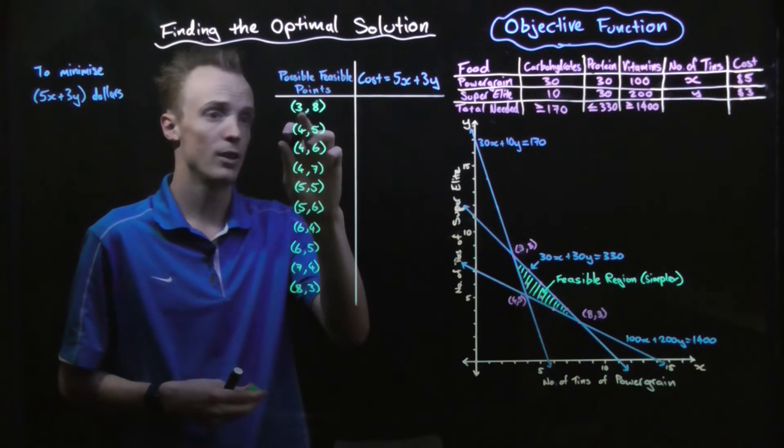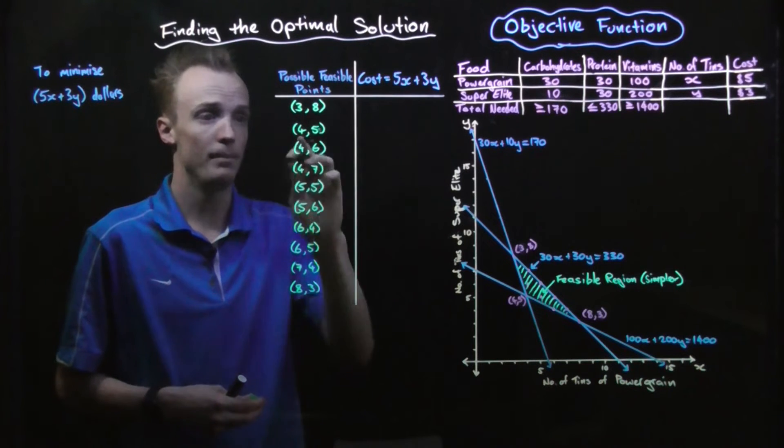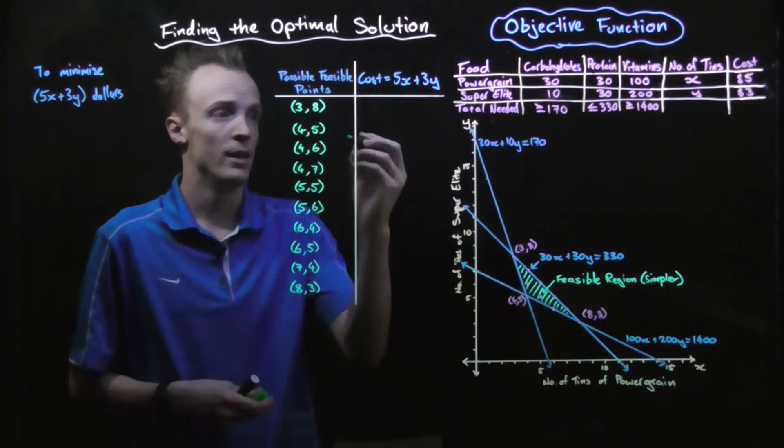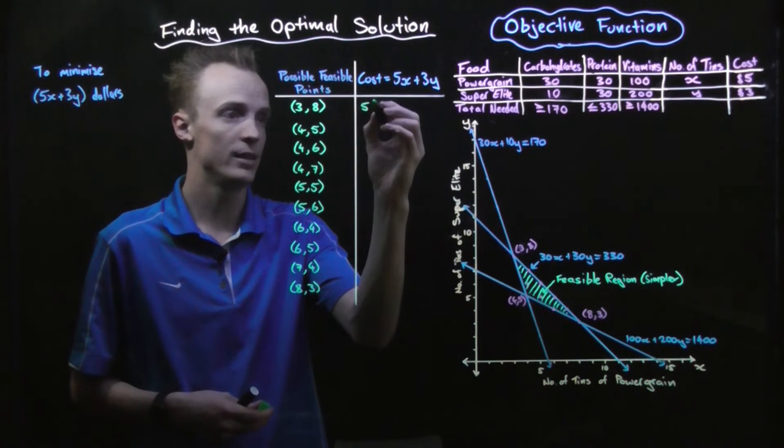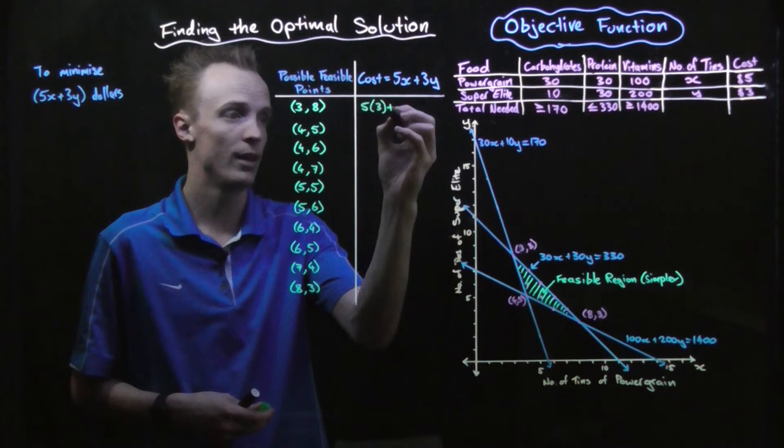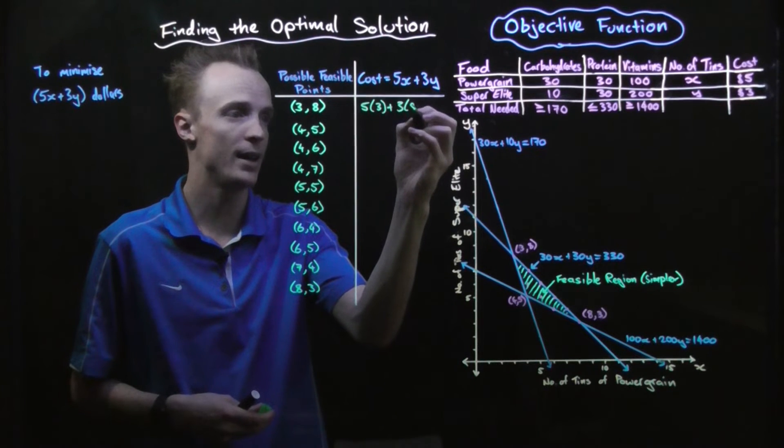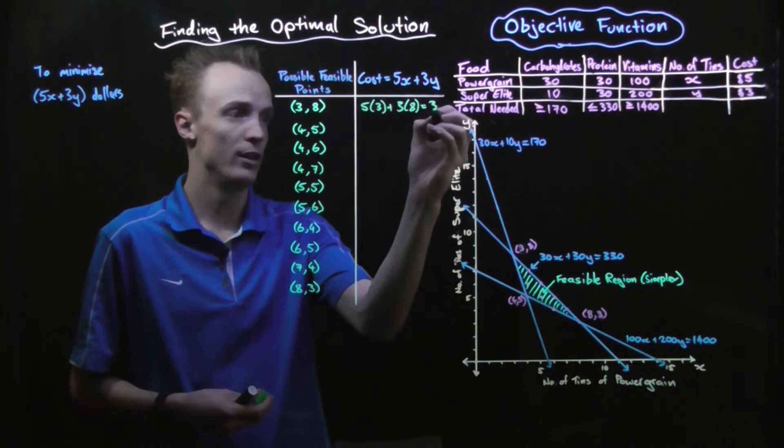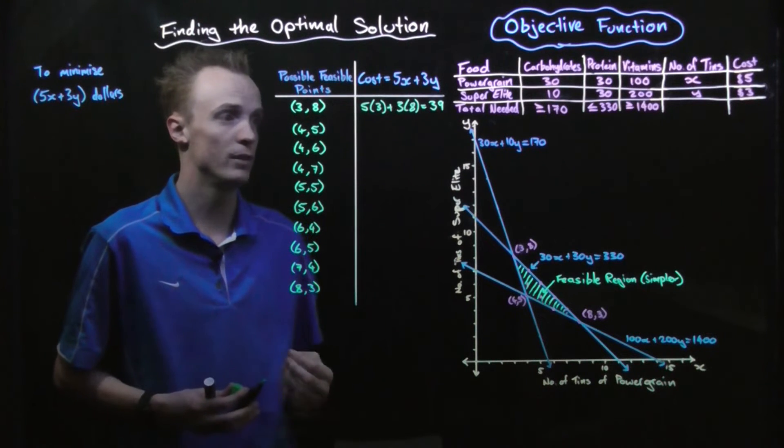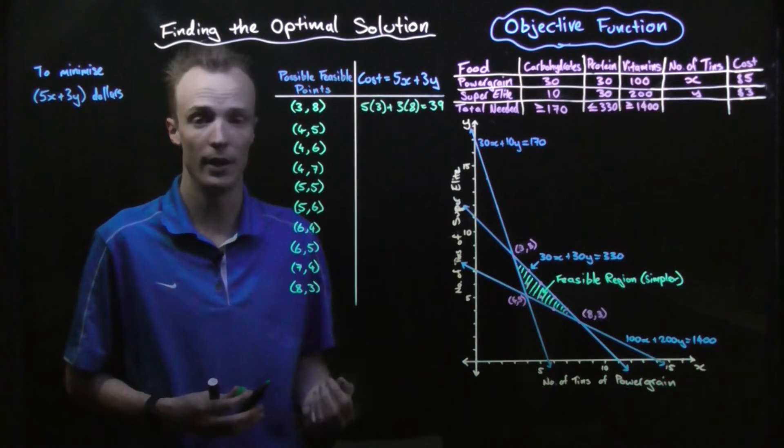For example, in this first combination we've got three tins of power grain and eight tins of super elite. So if we substitute that back into our objective function, our x is equal to 3 and our y is equal to 8, and that is equal to $39. So if we were to buy three tins of power grain and eight tins of super elite, it would cost us $39.